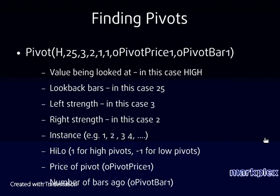Here is a pivot function looking to find high pivots, with a number of values being fed into it. The first parameter is the value being looked at — for high pivots we use H, for low pivots we would use L. You could also look for pivots of openings, closings, or a calculation like high plus low divided by 2. The next number, 25, is the number of lookback bars — how many bars we look back from the present to find a pivot. The function returns 1 if a pivot is found, and minus 1 if not.